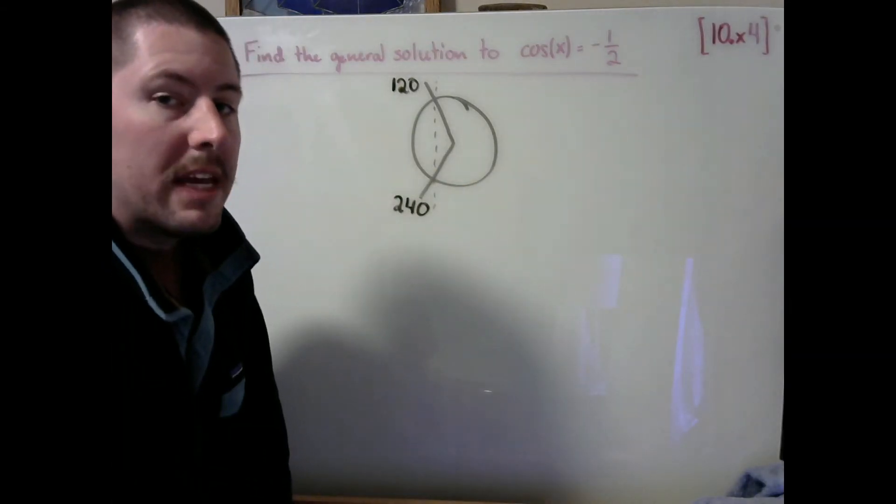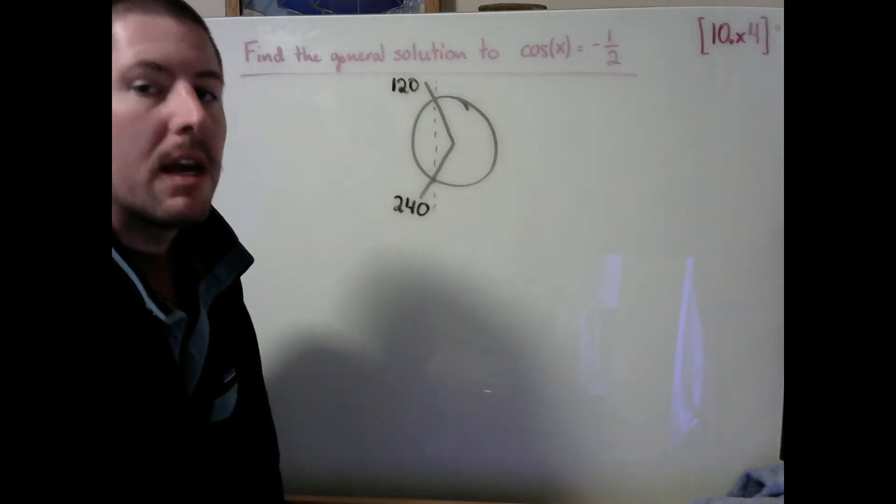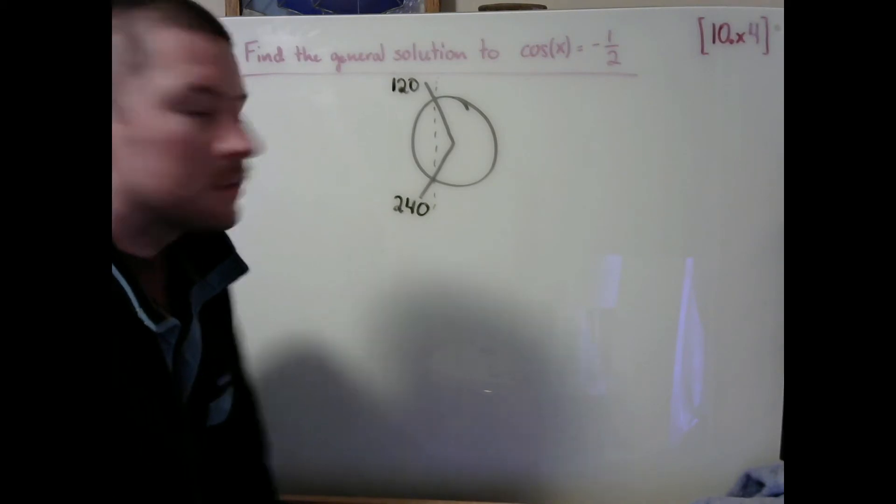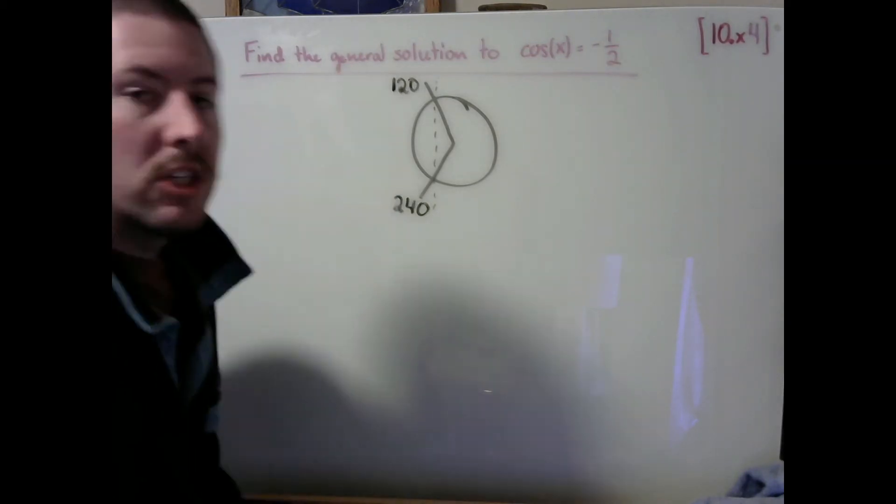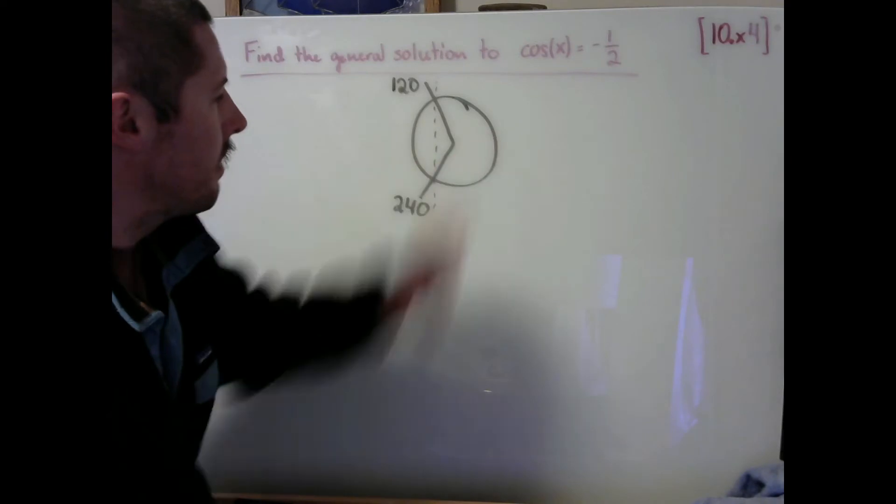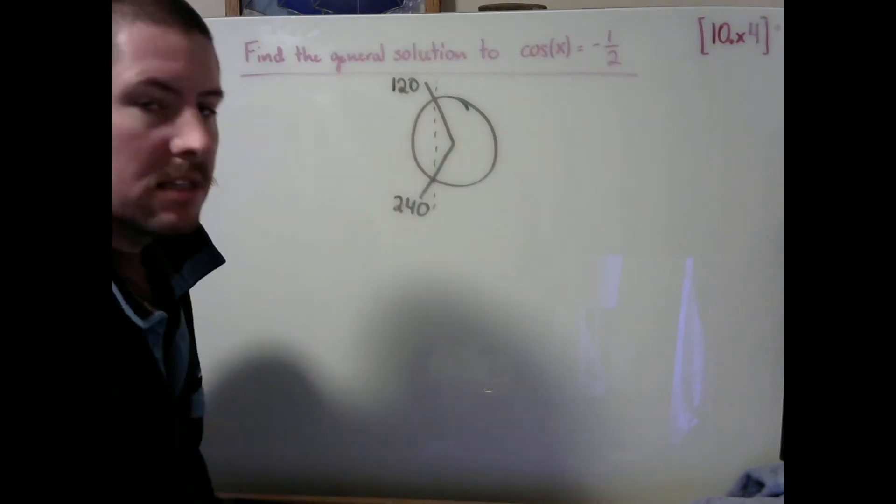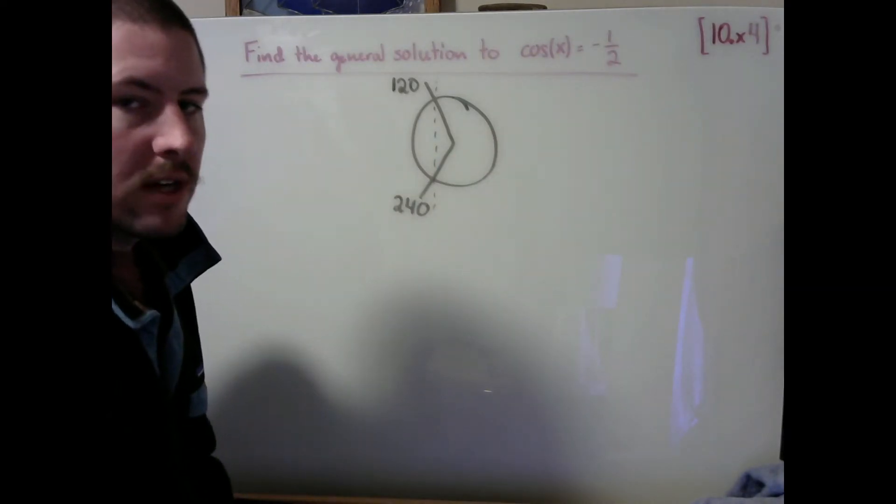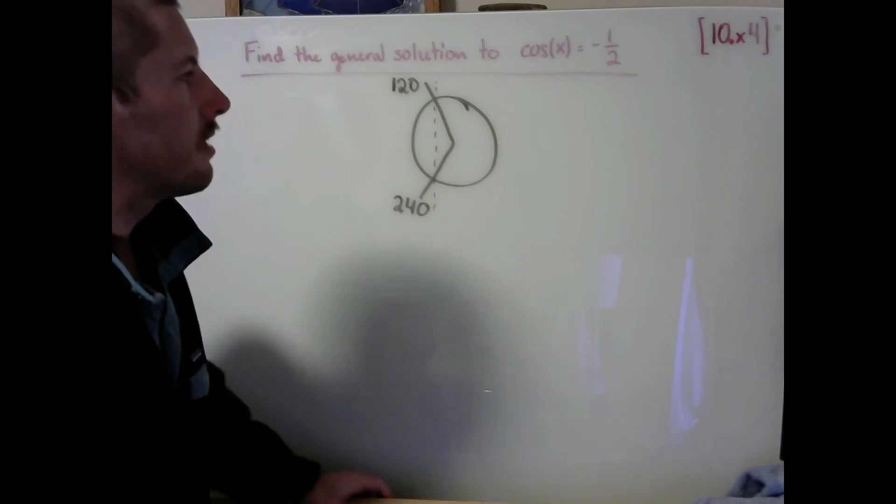So within the interval zero to 360, these would be my only two solutions. However, since we're looking for a general solution here, we would like to know all possible angles, not just the ones within zero to 360. These are certainly going to be our base cases from which we'd like to work, but we'd like to account for all the rest of our solutions as well.